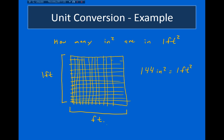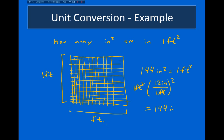One way to get this using a conversion factor: 1 square foot times 12 inches divided by 1 foot, and we square this conversion factor. We have to square it because we started with feet squared, so we need two units of feet in the denominator to cancel. Doing this gives us 144 square inches.